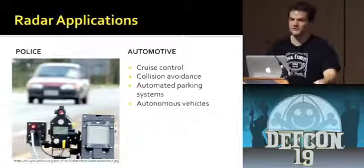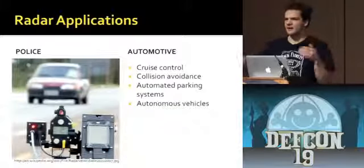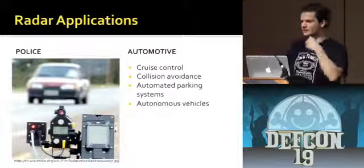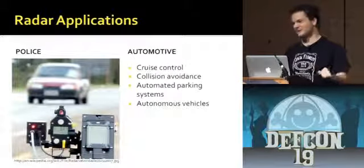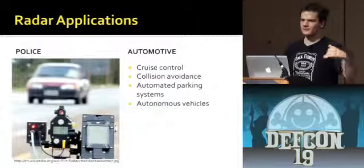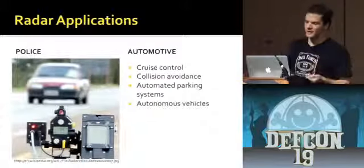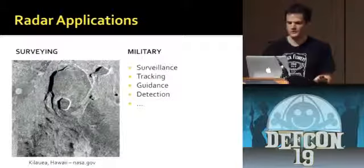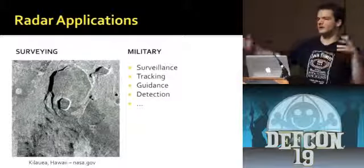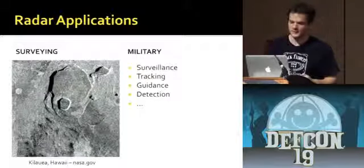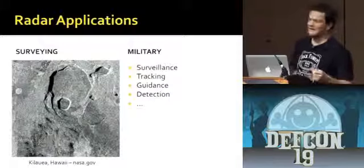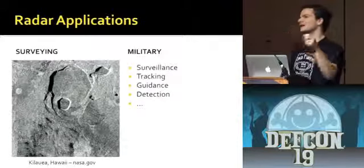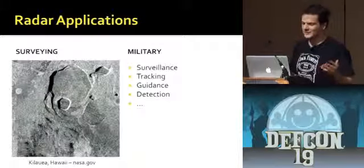On the automotive side, there's actually a lot more of this stuff. Any time you want to track things that are close by, there are radar systems — also LIDAR to some extent, which is pretty similar. They're using it for cruise control so your car can follow a certain distance behind the next car, collision avoidance so your car will apply the brakes right before you hit something, automated parking which I think is in the Prius. Autonomous vehicles in general are going to need a ton of this technology. It's also used for surveying applications — you can fly a plane over some terrain and get a 3D image of what it looks like. And the military uses it for practically everything.